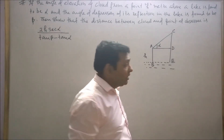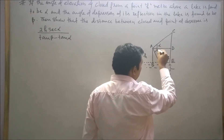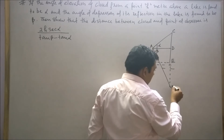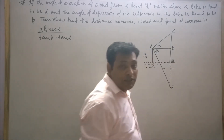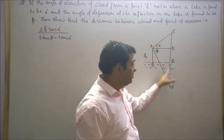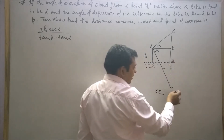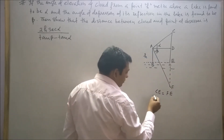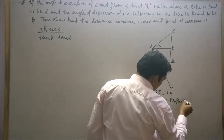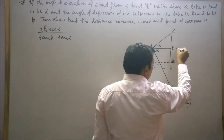It is given that the angle of depression of its reflection in the lake is found to be beta. By the law of reflection, we know that CE is equal to EF, since the distance of the object from the mirror is equal to the distance of the image from the mirror. So CE equals FE by the law of reflection. If AB is H, then DE is also H.